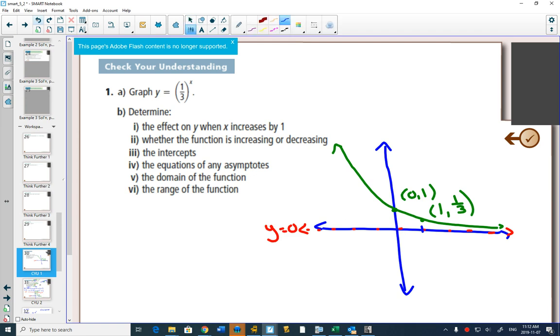So, graph. We're done our graph. That's all we need to have on our graph. We need our asymptote, and we need two points to give an indication of the curve and have the right shape.